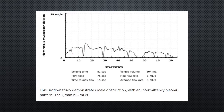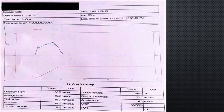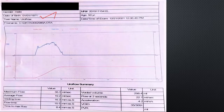This graph shows a low Q-max — the Q-max here is approximately 8 — and the graph is also irregular. This indicates the patient is having obstruction, probably detrusor dysfunction.